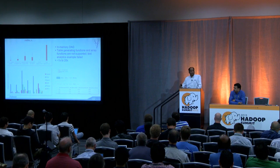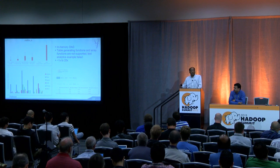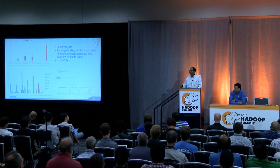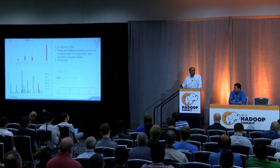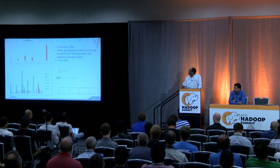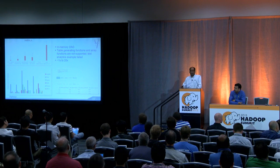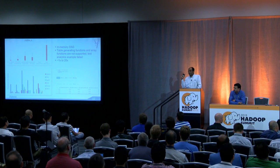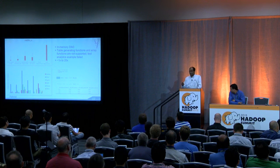Unfortunately, Impala was missing these table-generating functions and array processing functions, which caused the text analytics use case to fail. No enterprise developer would want to invest additional burden writing a native UDF for a feature that is basically an accepted standard across the industry. Two key takeaways: log analytics needs window functions, and text analytics needs array functions and UDTFs — user-defined table-generating functions.